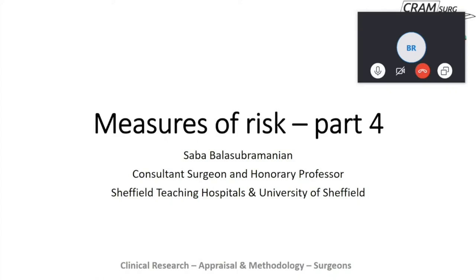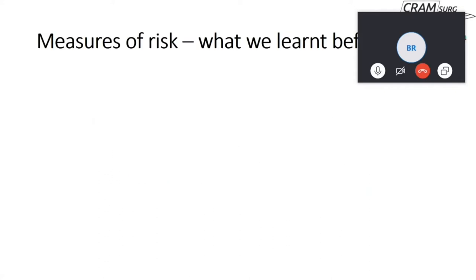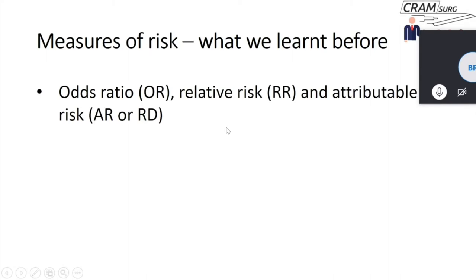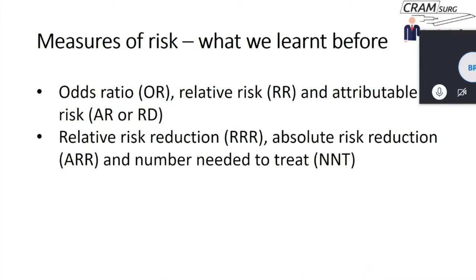We'll talk about measures of risk — the final part. For those of you who have not come across the earlier versions, they're all there on the website and on YouTube. It might be worth your while looking through parts one to three, because we're going to skip over the basic concepts. We talked about odds ratios, relative risk and attributable risk, relative risk reductions, absolute risk reduction and number needed to treat, and we then moved on to time-to-event data.